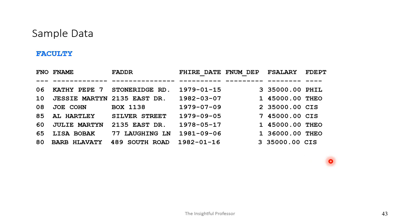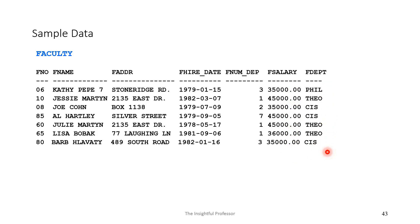The faculty table: FNO is the primary key — a unique identifier. We have a date for the hire date, an integer for the number of dependents, and a decimal for the salary. F_department is a foreign key, and you can validate that by seeing only values of CIS, theology, and philosophy in that column — no values outside of those shown in the department table.